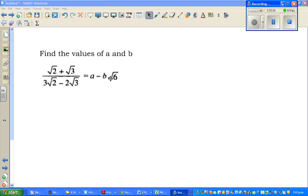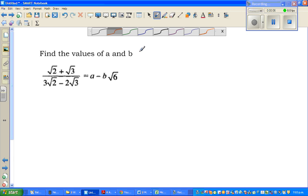Find the value of a and b. If root 2 plus root 3 over 3 root 2 minus 2 root 3 is equal to a, this is equal to a minus b root 6.